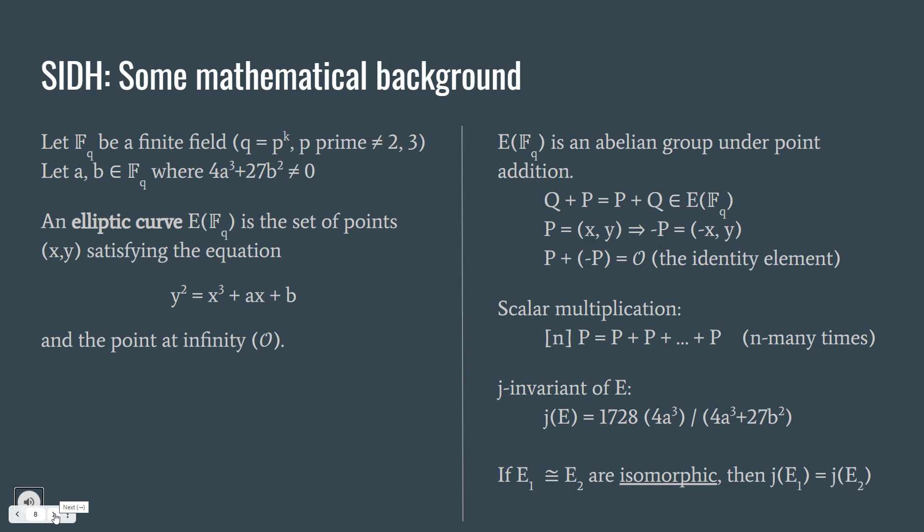This is an abelian group under point addition. You can easily add two points P plus Q or Q plus P. It will give you another point on the curve, which means it satisfies the equation. And if you are given a point P, the negative of P, the inverse of P is very easy, just negative x and y. And if you add P and negative P, you have the identity element O, the point at infinity. The scalar multiplication n times P is just addition of n many P, n many points P.